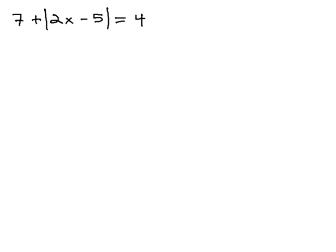We know when solving absolute value equations, we must first get the absolute value alone. In this problem, 7 plus the absolute value of 2x minus 5 equals 4, we need to get that absolute value alone by subtracting 7 from both sides of the equation.